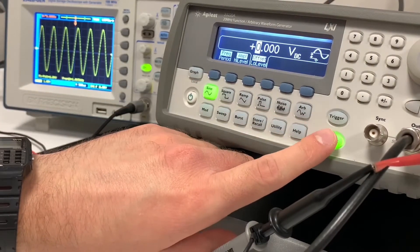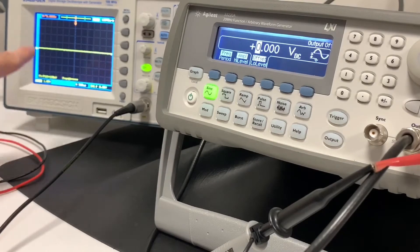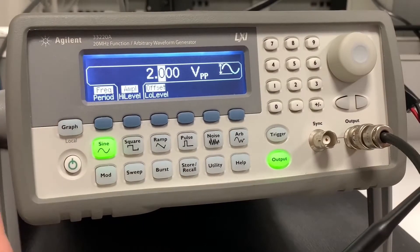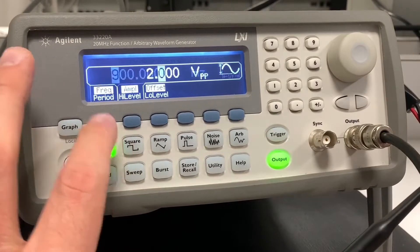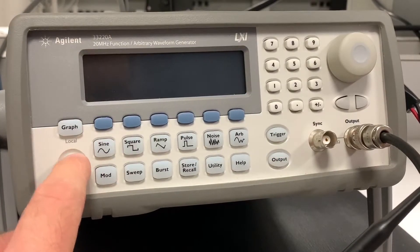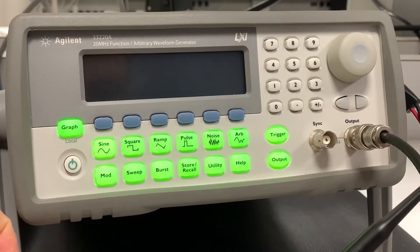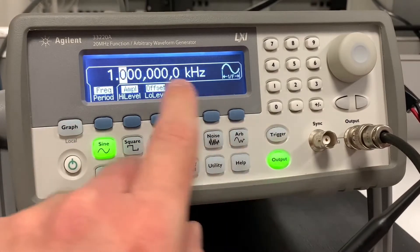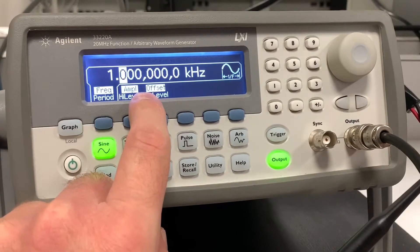And to turn off the signal, you just press output again, and that will cause all the output signals to stop. Now for the most part, that's pretty much what you need to do. But you will notice that whenever I turn this off and turn it back on, the output has changed back to one kilohertz.